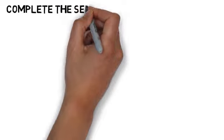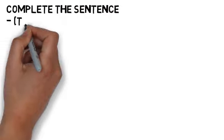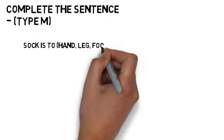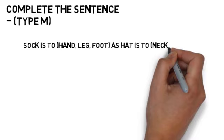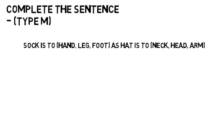Complete the sentence type M. In these questions there is one sentence which has two groups of words in brackets. Using one word from each group of words, a complete sentence can be made. The two words that you pick will have some sort of relationship with the sentence.